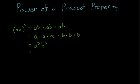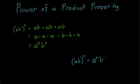We can extrapolate a general property here: if you have the product AB and you raise it to the nth power, you end up with A to the N times B to the N. That is our power of a product property.